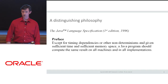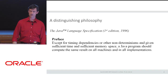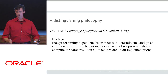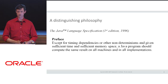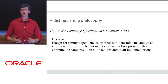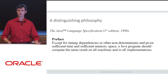This is a quote from the beginning of the preface of the first Java language specification: except for timing dependencies or other nondeterminisms, and given sufficient time and sufficient memory space, a Java program should compute the same result on all machines and in all implementations. There really is a big difference here, especially comparing Java to something like C, where we have to worry about the sizes of integers, pointers, and side effects during expression evaluation. This philosophy led to predictable programs and extended to the floating-point area for numerics.